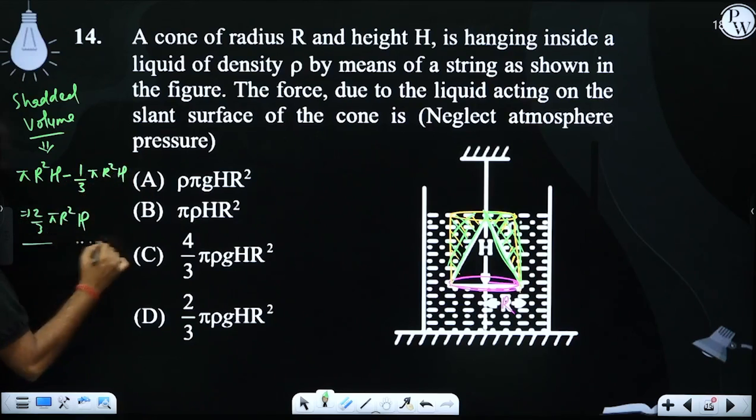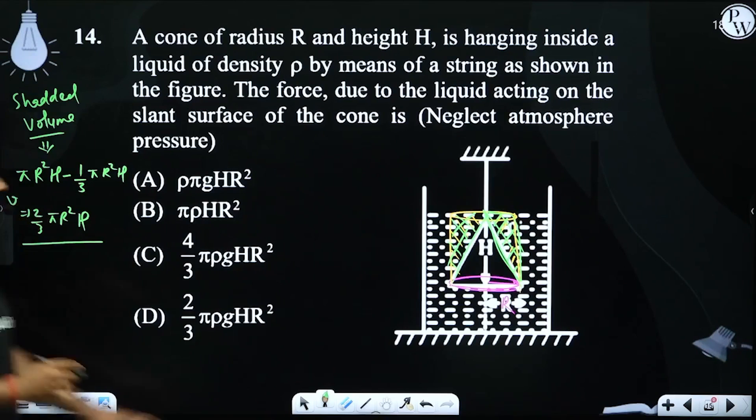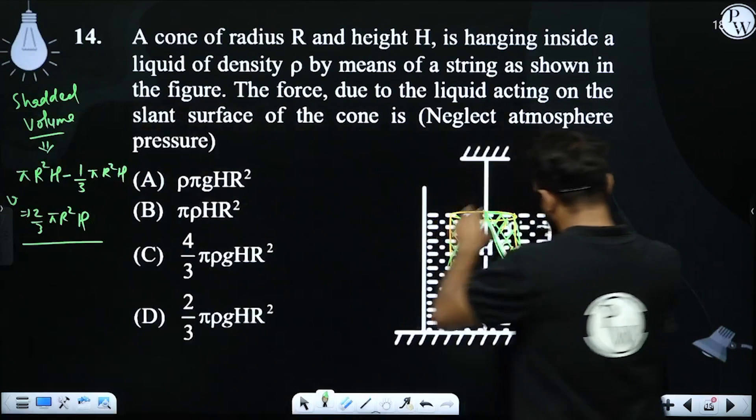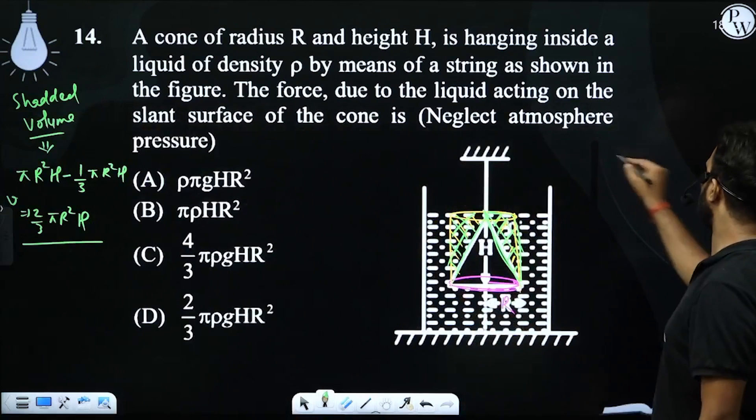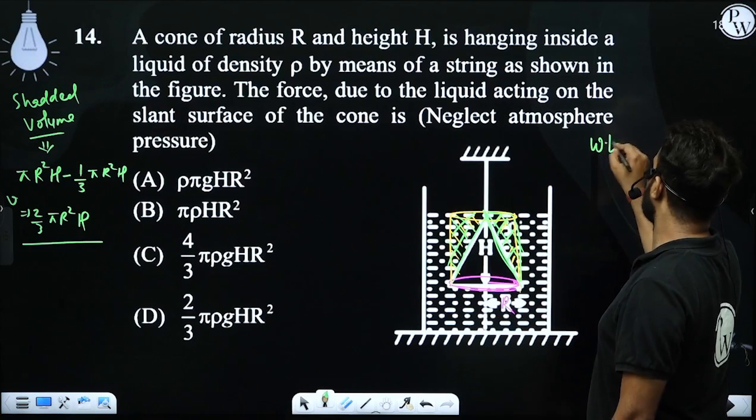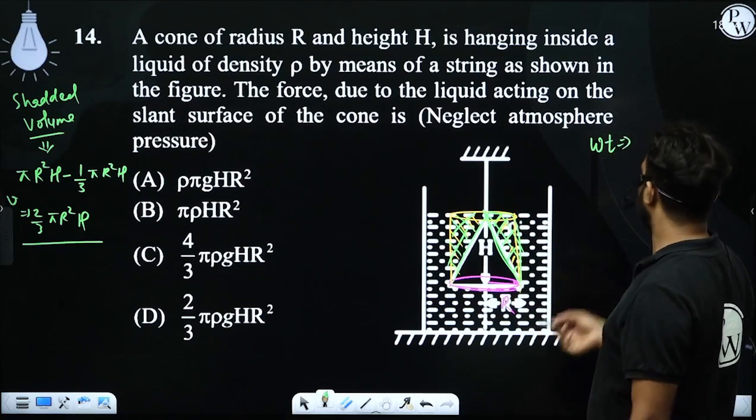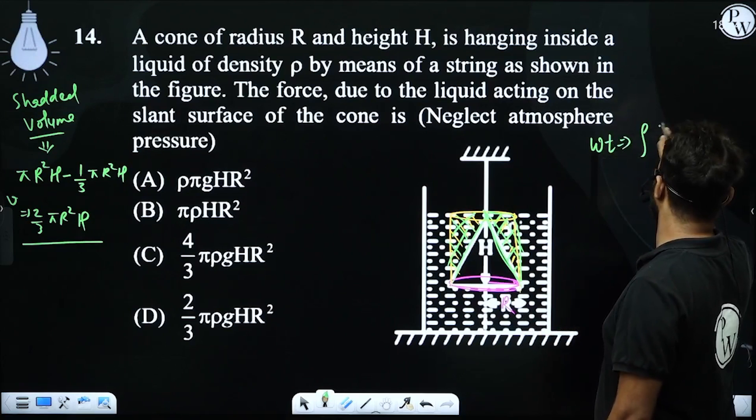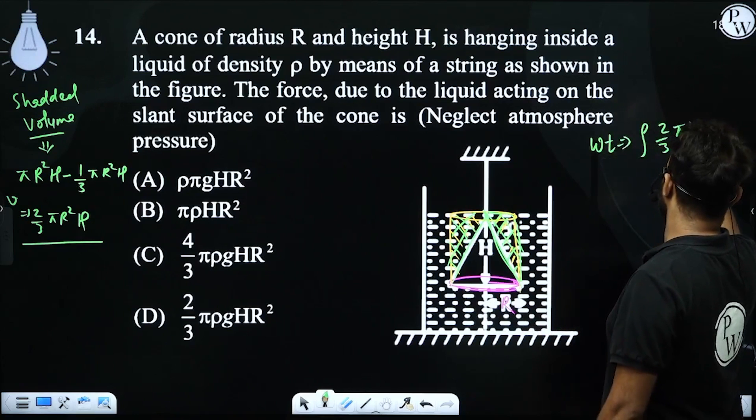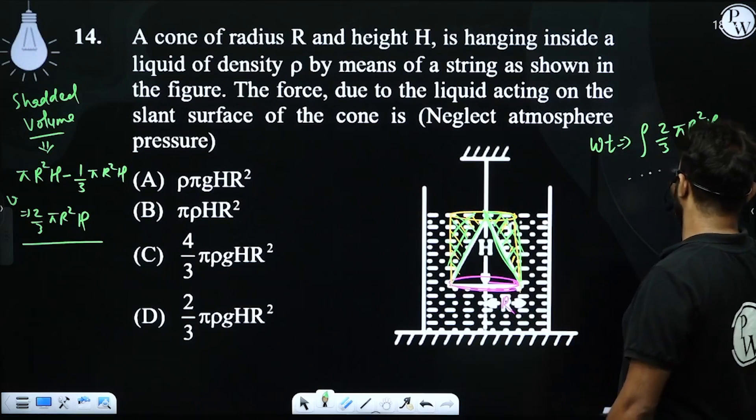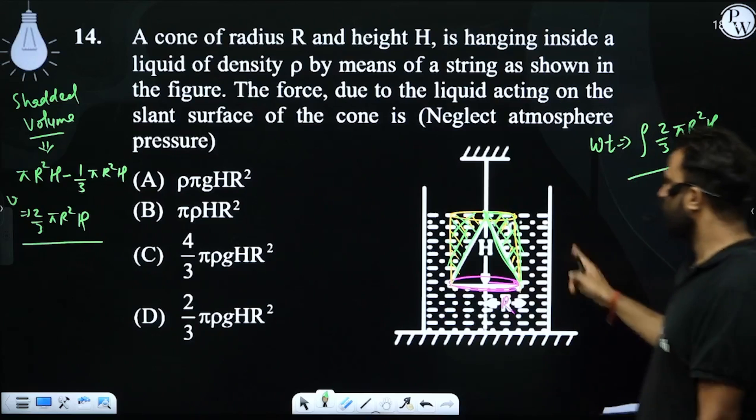Now this is the volume, so basically its weight will exert force on the slant surface. The weight will be its density times volume, which is nothing but (2/3)πR²H times ρ.